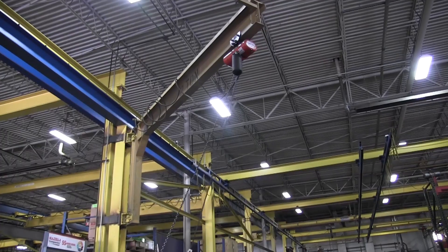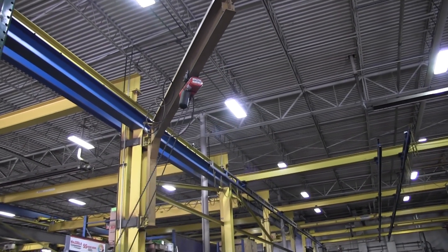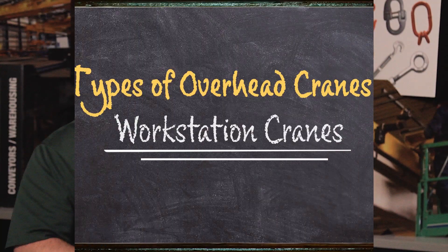You have different types of jib cranes: one is mounted on the floor on a base plate and gives you 360 degrees of full rotation. If you don't want that floor space taken up, you can mount them off of a column, though you lose the ability to rotate a full 360 degrees — you're more along the lines of 180 to 200 degrees of movement.